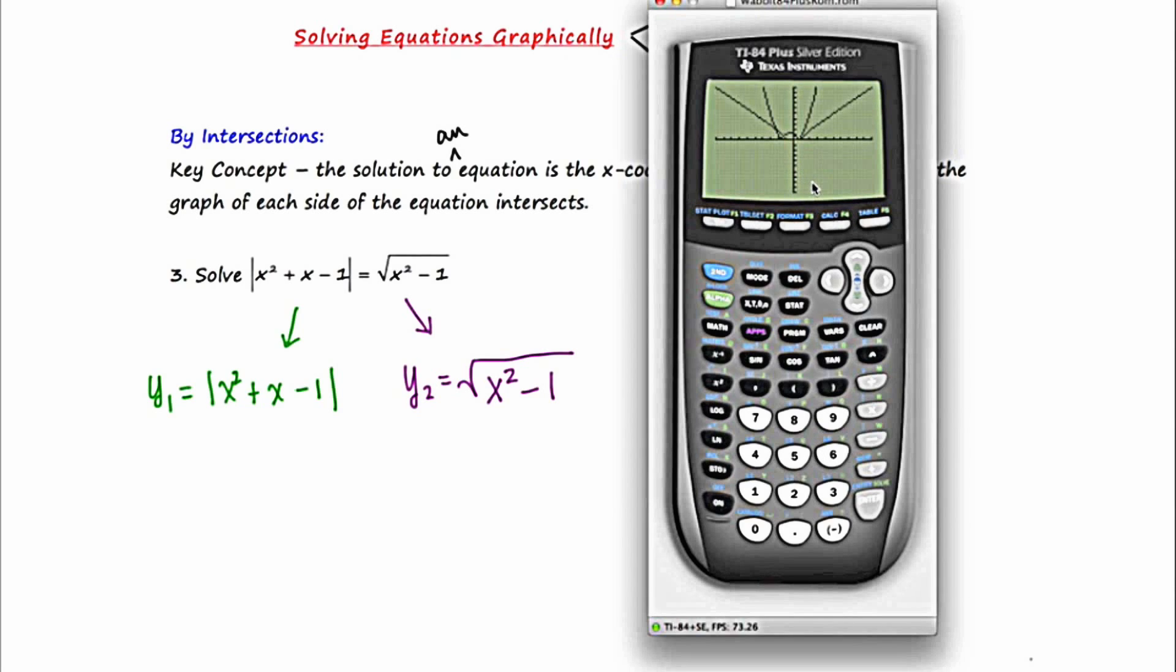Now like example two, there's not a whole lot happening at the bottom of the screen. So I'm going to just tweak this a little bit and go to my window and make my y min instead of negative 10, I'm going to make it negative two. I'm going to press graph and see how that's adjusted the window.